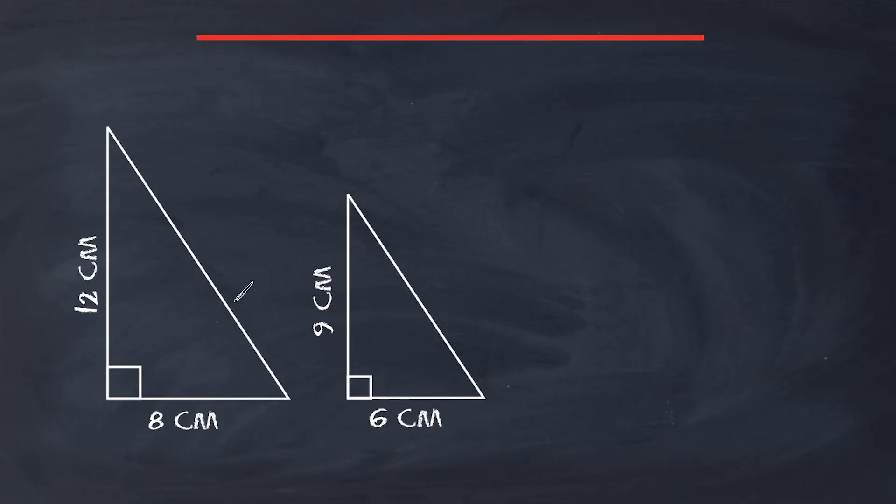So with this example, we have two triangles. This triangle has a base of 8 and a height of 12, and this triangle has a base of 6 and a height of 9.